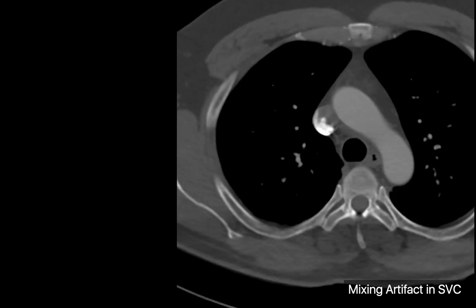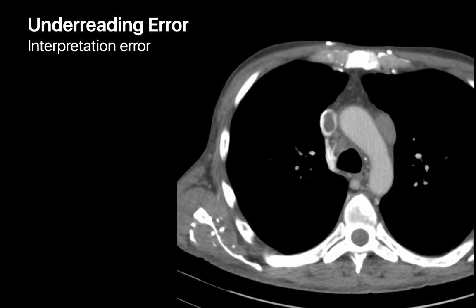Here is an example of an interpretation error. Typically when intravenous contrast is injected into one arm, unenhanced venous blood from the other arm mixes in the SVC with the enhanced venous blood from the injected arm to form an apparent filling defect. The individual who reviewed this CT looked at the SVC, saw a filling defect within the contrast pool, and called it a normal mixing artifact instead of what it really was — a thrombus in the SVC.